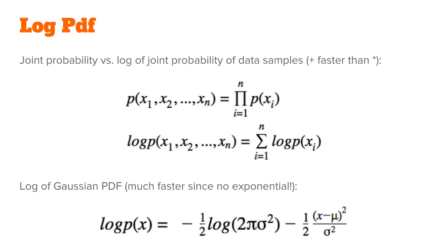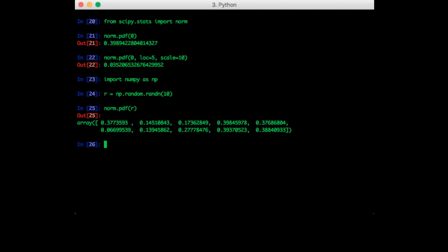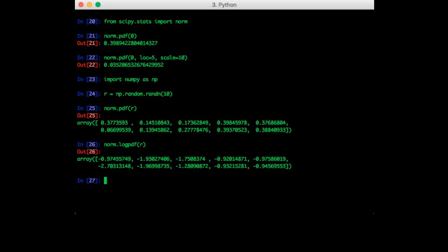So a lot of the time, it is advantageous to work with the log probability rather than the actual PDF. Conveniently, there's a function for that too. So that's just norm.logpdf, and you pass in the values.